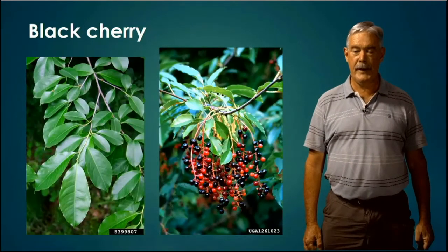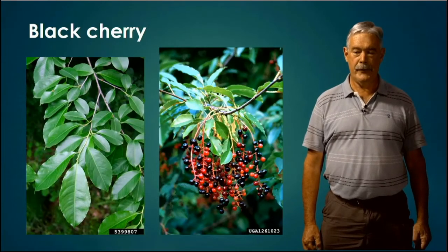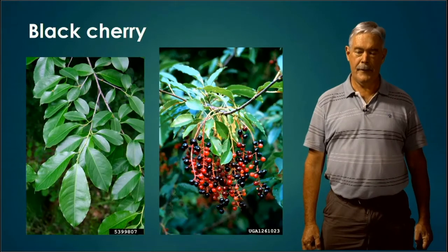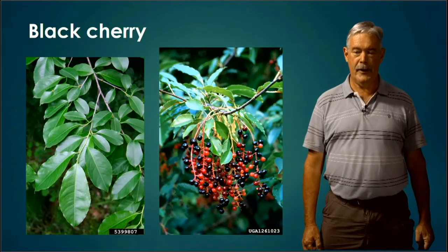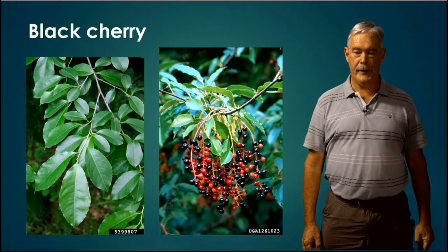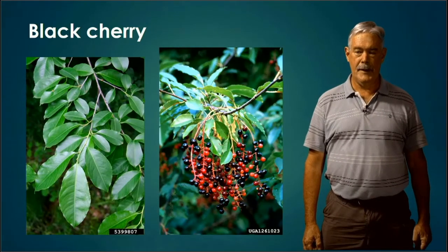Your black cherry tree is different. It is also a similar shaped leaf, but different enough to tell apart. It has very light serrations on the outside. It's a simple, alternating leaf. If you're lucky enough to see the black cherry fruits, that would be a good identifier.